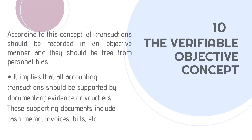The last concept is the verifiable objective concept. This concept basically frees accounting from personal bias. If we have all supporting evidence of accounting transactions — such as vouchers, cash memos, invoices, bills, etc. — the transaction increases in authenticity. According to this concept, we need supporting evidence for each transaction so that it remains authenticated and can be recorded.